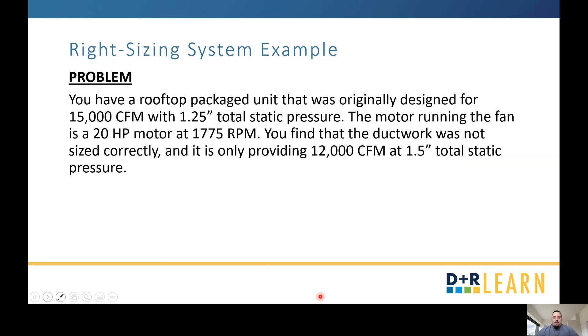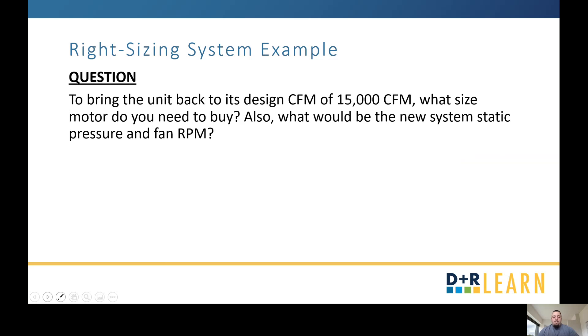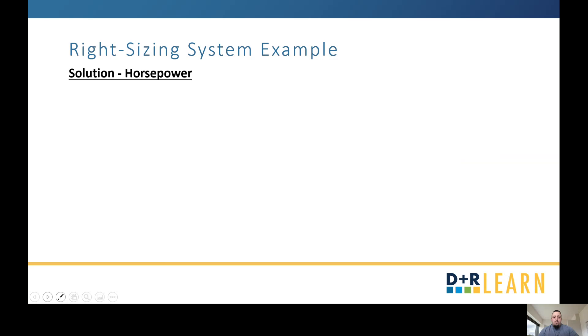Here's the problem. You have a rooftop package unit that was originally designed for 15,000 CFM with one and a quarter inch total static pressure. The motor running the fan is a 20 horsepower motor running at 1775 RPM. You find that the duct work was not sized correctly. The unit's only providing 12,000 CFM at one and a half inches of total static pressure. Here's the question: If you wanted to bring that unit back to its designed CFM of 15,000, what size motor are you going to need to buy? Also, what would the new system static pressure be as well as the fan RPM?